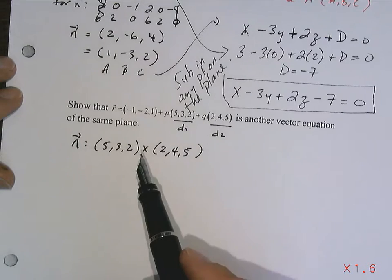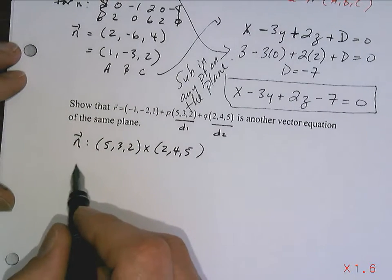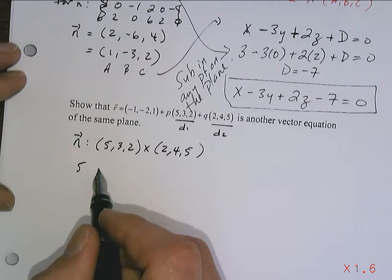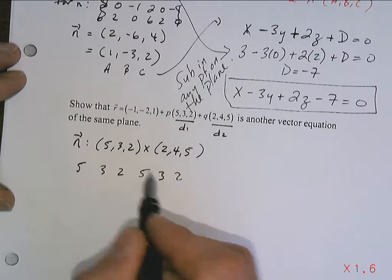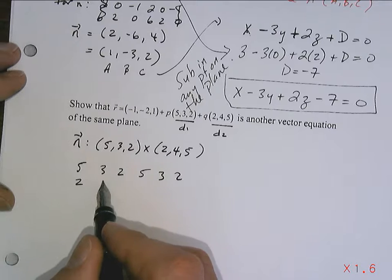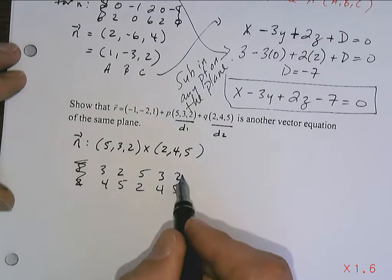Now if they're going to represent the same plane, they've got to have the same normal. Does that kind of make sense? Okay, so doing a little bit of work here. Notice I don't put an equal sign there. 5, 3, 2; 5, 3, 2. Notice this one goes first. 2, 4, 5; 2, 4, 5. Goodbye, goodbye.